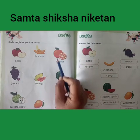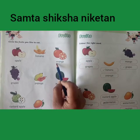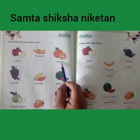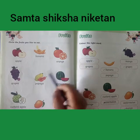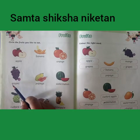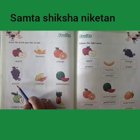This is orange. O, R, A, N, G, E — orange. What is this? Grapes. G, R, A, P, E, S — grapes.